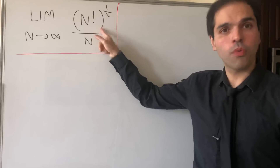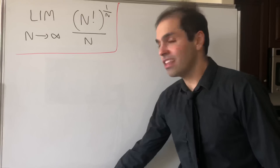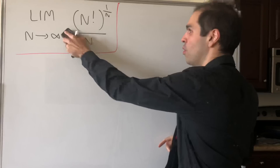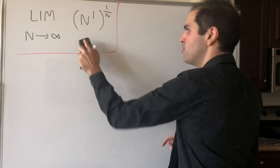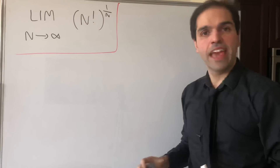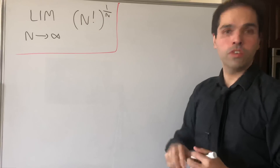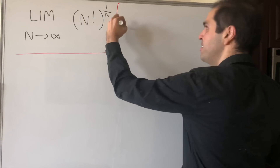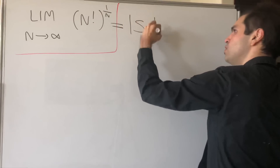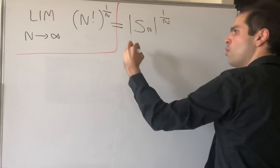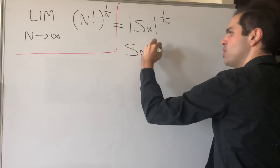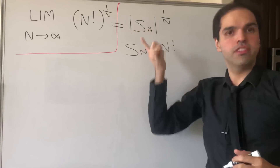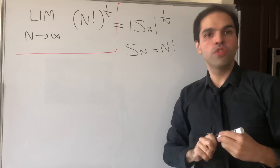Before starting this problem, let's actually study a slightly easier problem, which will turn out to help us solve the original one. Namely, let's first try to find the limit as n goes to infinity of n factorial to the 1 over n. Notice this is precisely of the form S_n to the 1 over n, where S_n is the sequence n factorial.